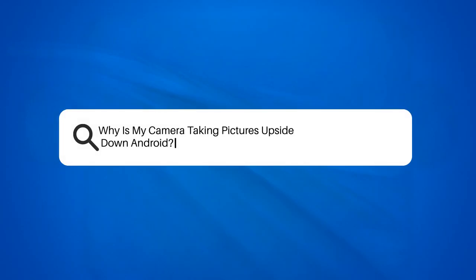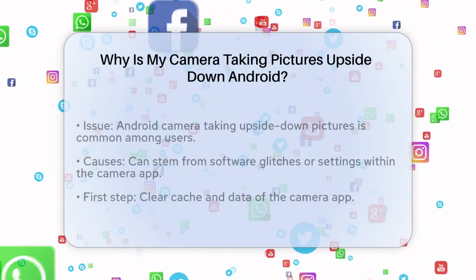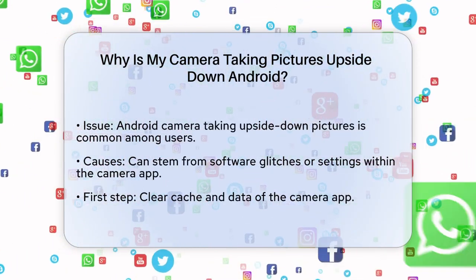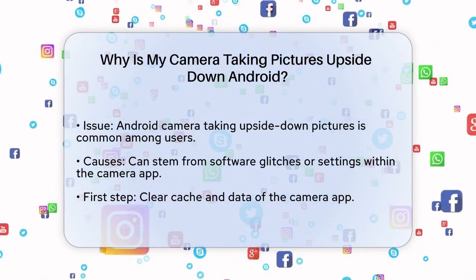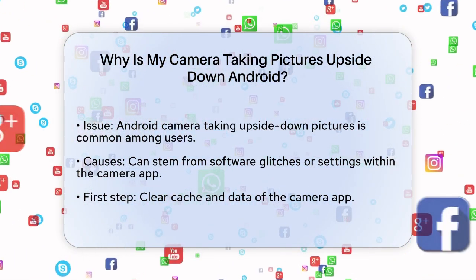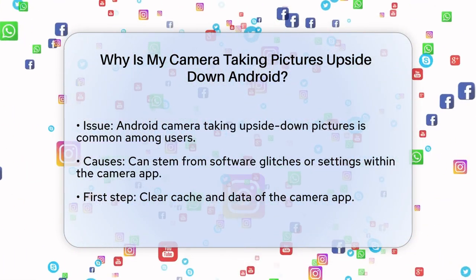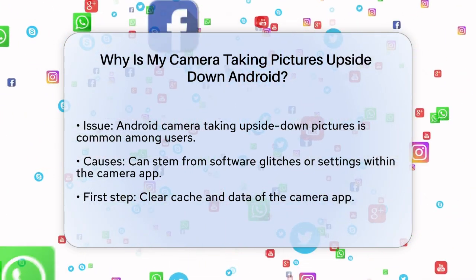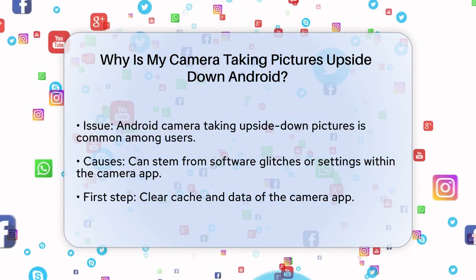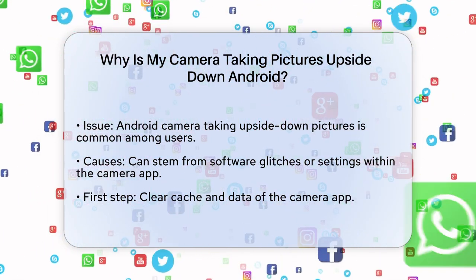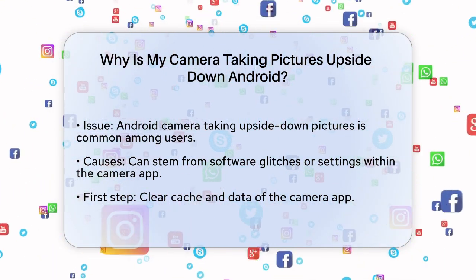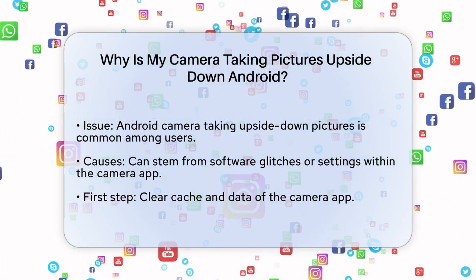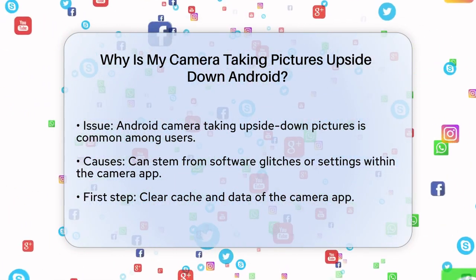Why is my camera taking pictures upside down on Android? If you are frustrated because your Android camera is taking pictures that are upside down, you are not alone. Let us figure out what might be causing this issue and how you can fix it. This problem can arise due to a few different reasons. One common cause is a software glitch or a settings issue within the camera app itself.